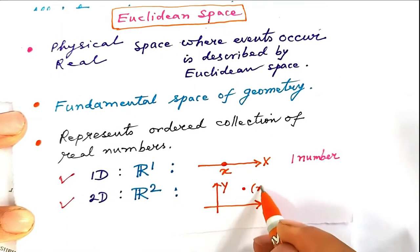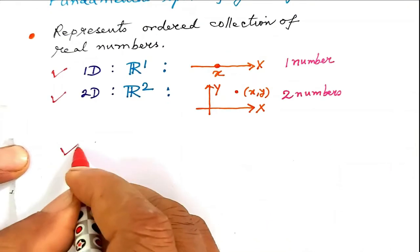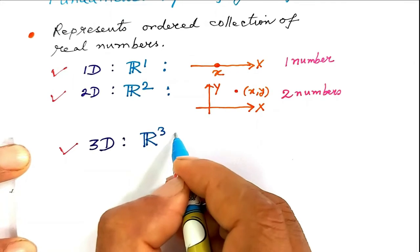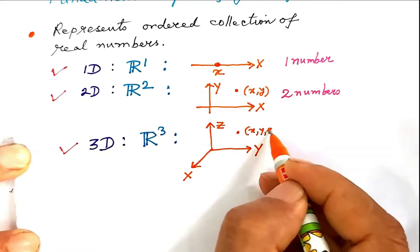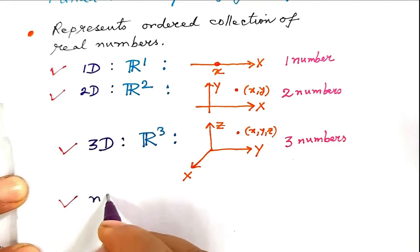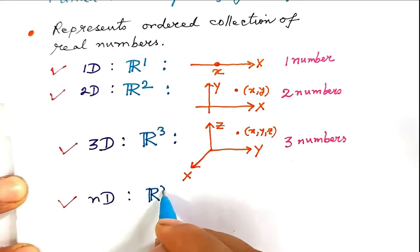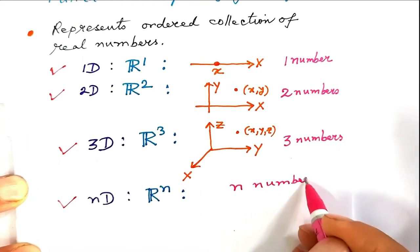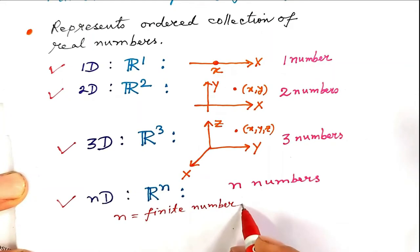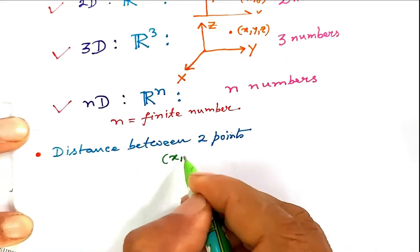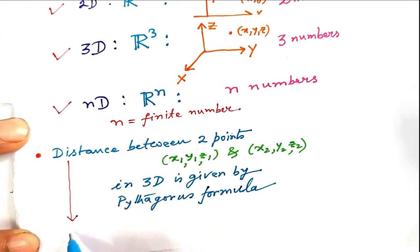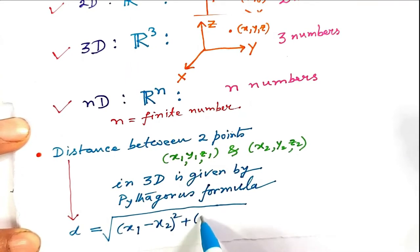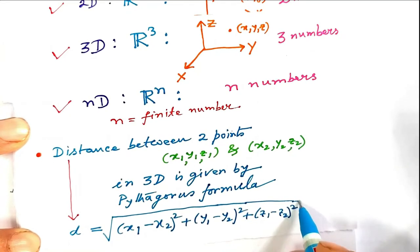To specify a point in R2 we need two numbers. A three-dimensional space is denoted by R3, represented by three axes x, y, z; to specify a point we need three numbers. Extending this idea, we go to an n-dimensional space denoted by Rn, where to specify a point we need n numbers, with n finite. The distance between two points (x1,y1,z1) and (x2,y2,z2) in 3D is given by the Pythagorean formula: d equals the square root of (x1−x2)² + (y1−y2)² + (z1−z2)².